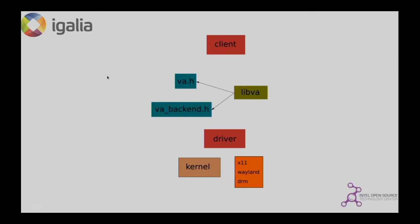The operations are stateless. You pass slice by slice or frame by frame, and you have to add all the context information to that slice in order for it to be decoded, encoded, or post-processed. The driver connects to the kernel, to the windowing system, or whatever it needs to do the processing.